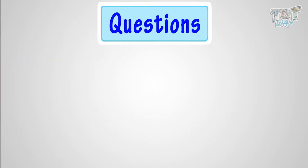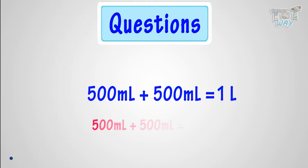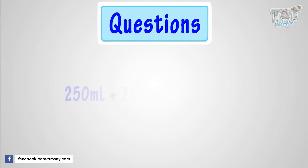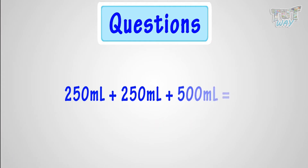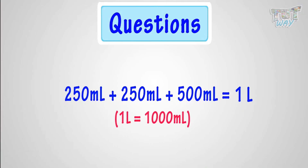Good! Now, 500 milliliters plus 500 milliliters makes how many liters? It is 1 liter, as 500 milliliters plus 500 milliliters is 1,000 milliliters. Now, 250 milliliters plus 250 milliliters plus 500 milliliters is how many liters? It is again 1 liter, as it adds up to 1,000 milliliters.